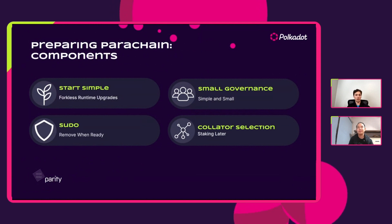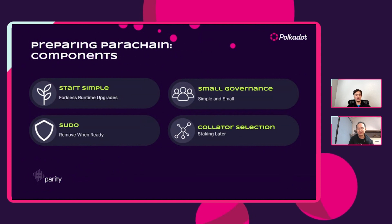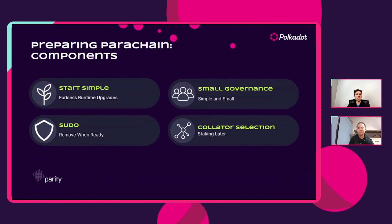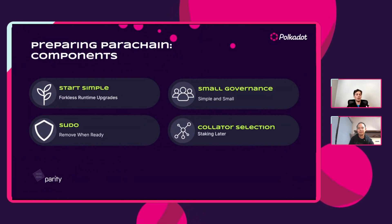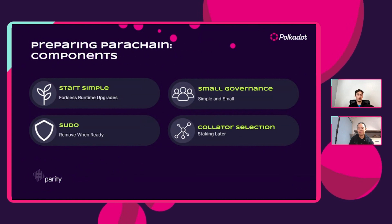We do recommend starting with sudo. Decentralization is super important, but we recognize the benefits of sudo at initial launch. It allows you to prepare and make sure everything is running smoothly, and your runtime upgrades can proceed with less chance of your chain becoming inaccessible — for example, if governance breaks, you can use sudo to perform runtime upgrades. When you feel you have a decentralized and secure enough technology like full governance that works well, go ahead and remove sudo through a runtime upgrade.